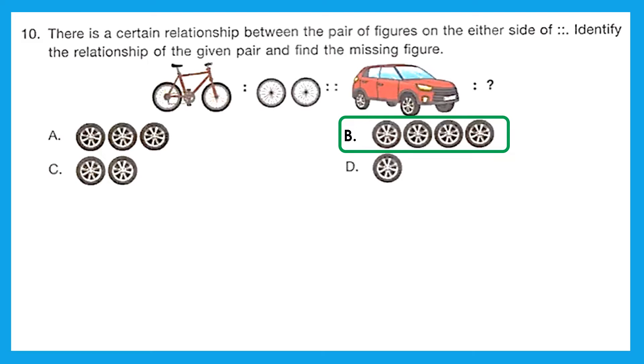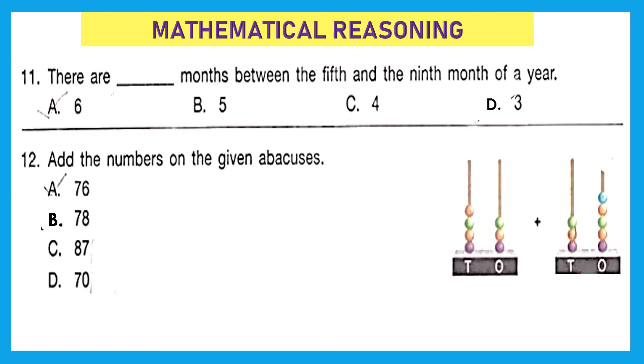Let's move to the mathematical reasoning. Question 11: There are how many months between the fifth and the ninth month of a year? How many months are there in between? Okay, so fifth is there already. We have six, seventh, eighth, and then comes ninth. So in total we have three months in between fifth and ninth. So option D is the right answer.